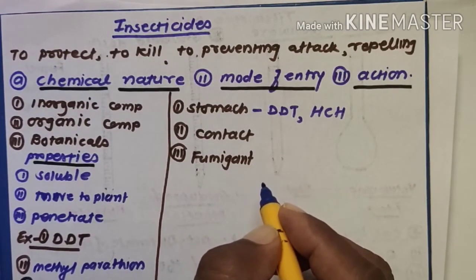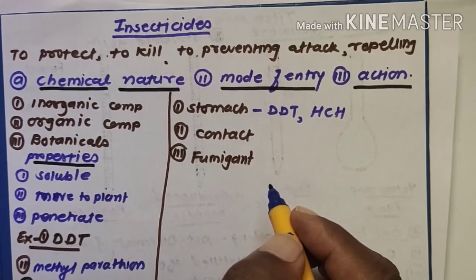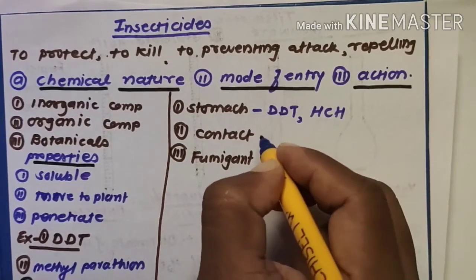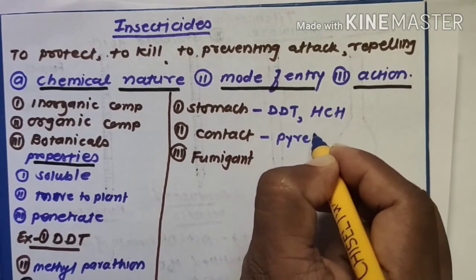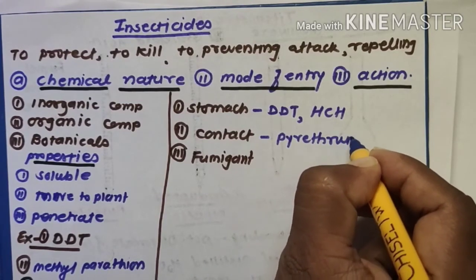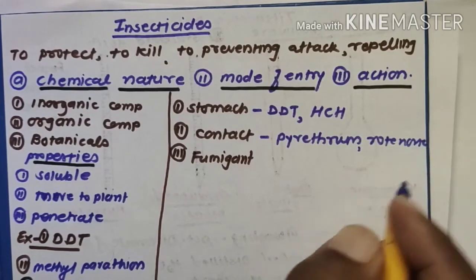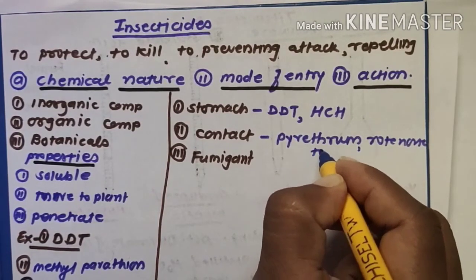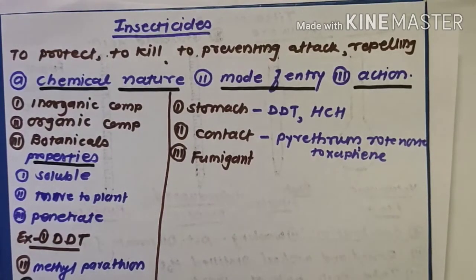Contact insecticides kill the insect due to external contact and absorption through the skin. Their application is through the body surface, and entry is through the cuticle and tracheae. Examples of contact insecticides are pyrethrin, rotenone, and toxaphene.